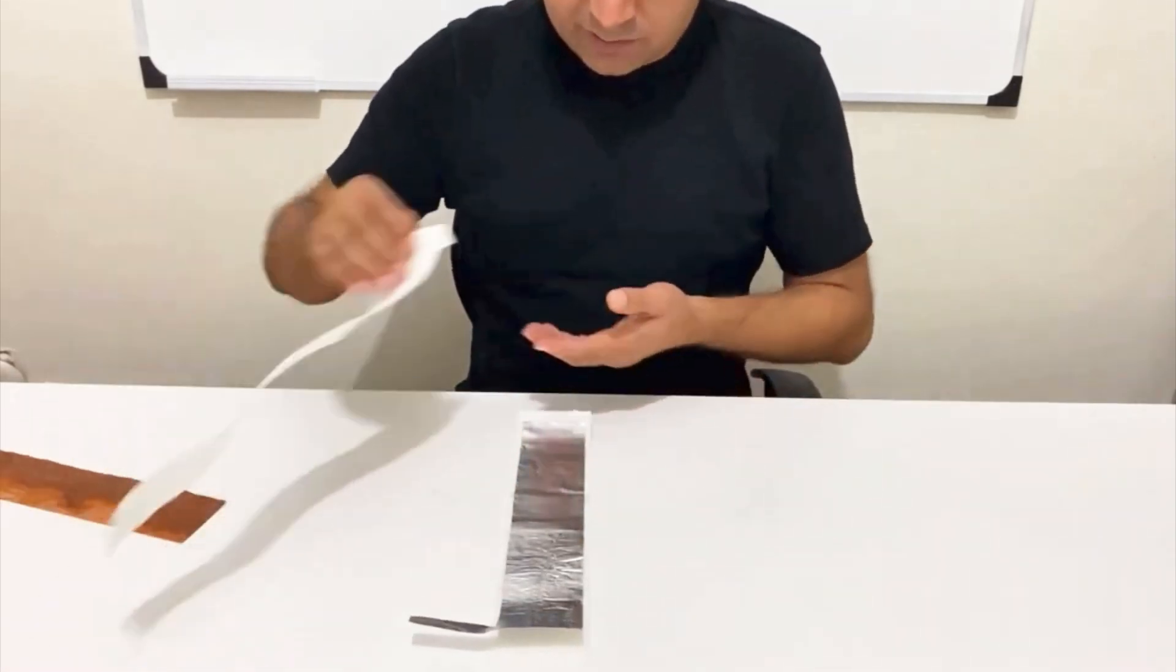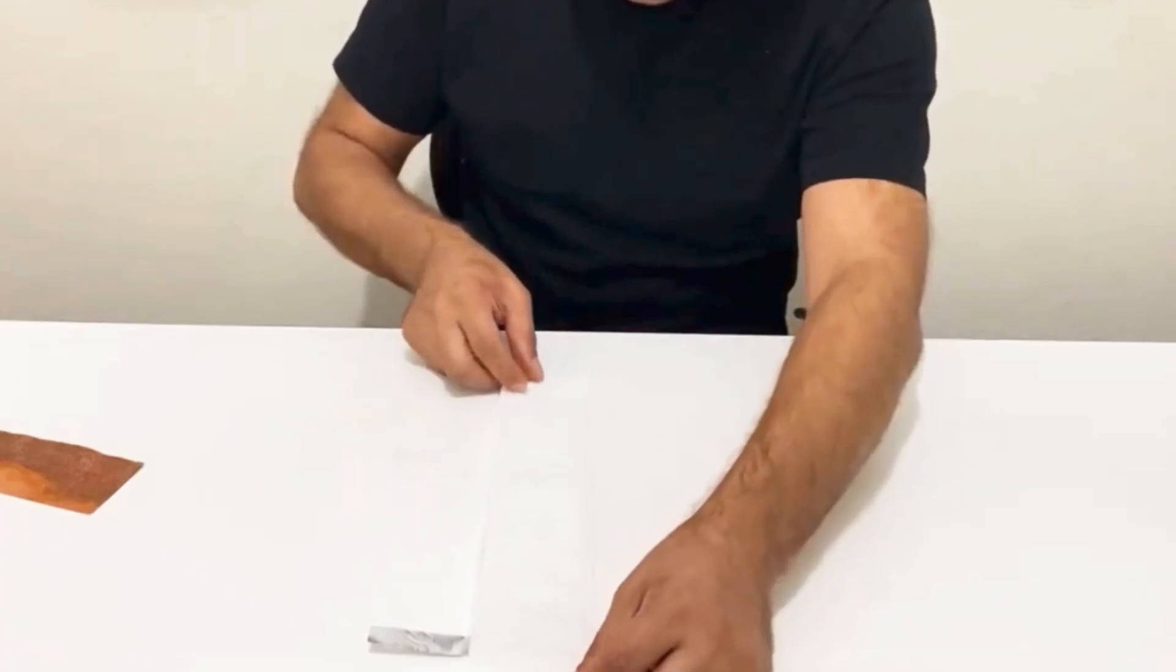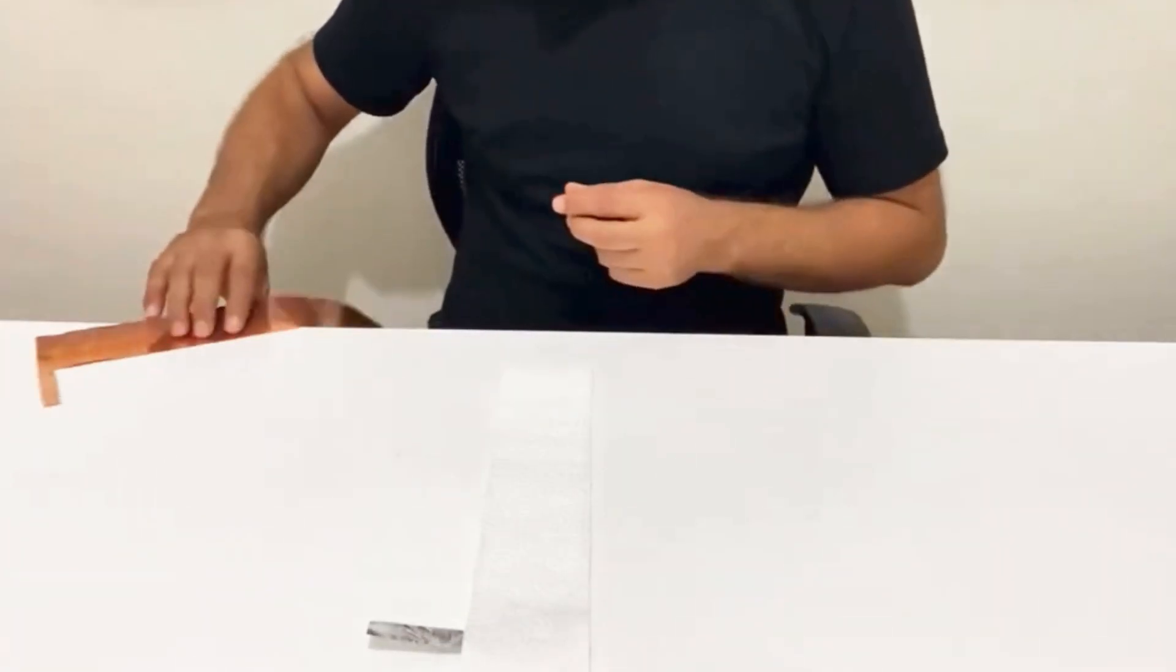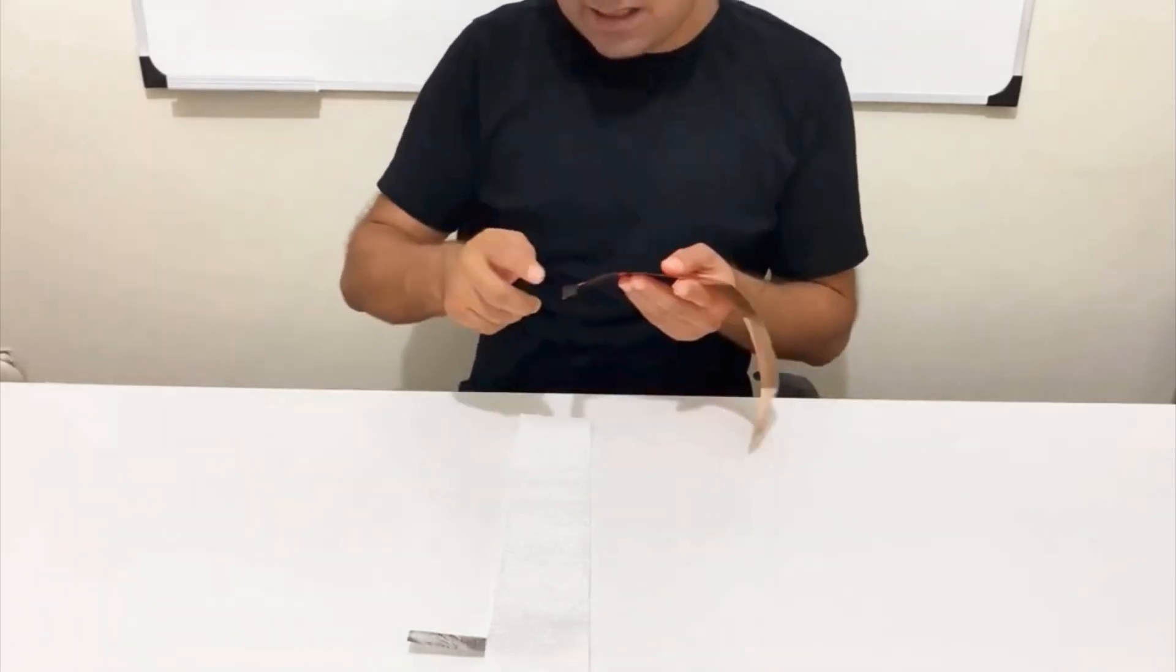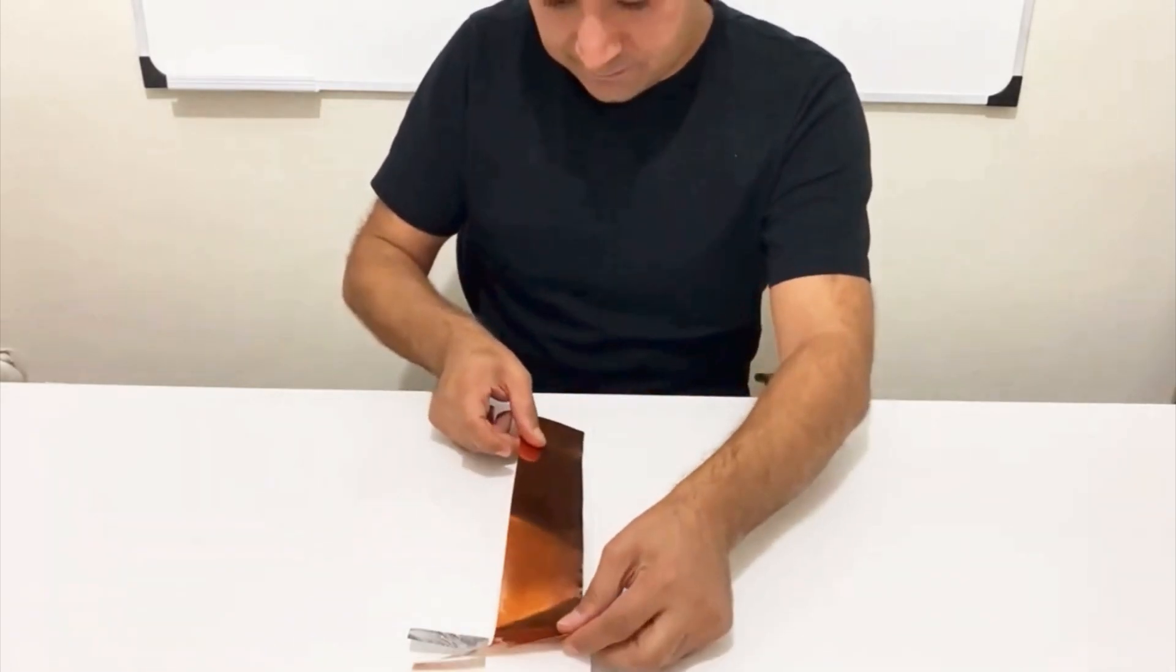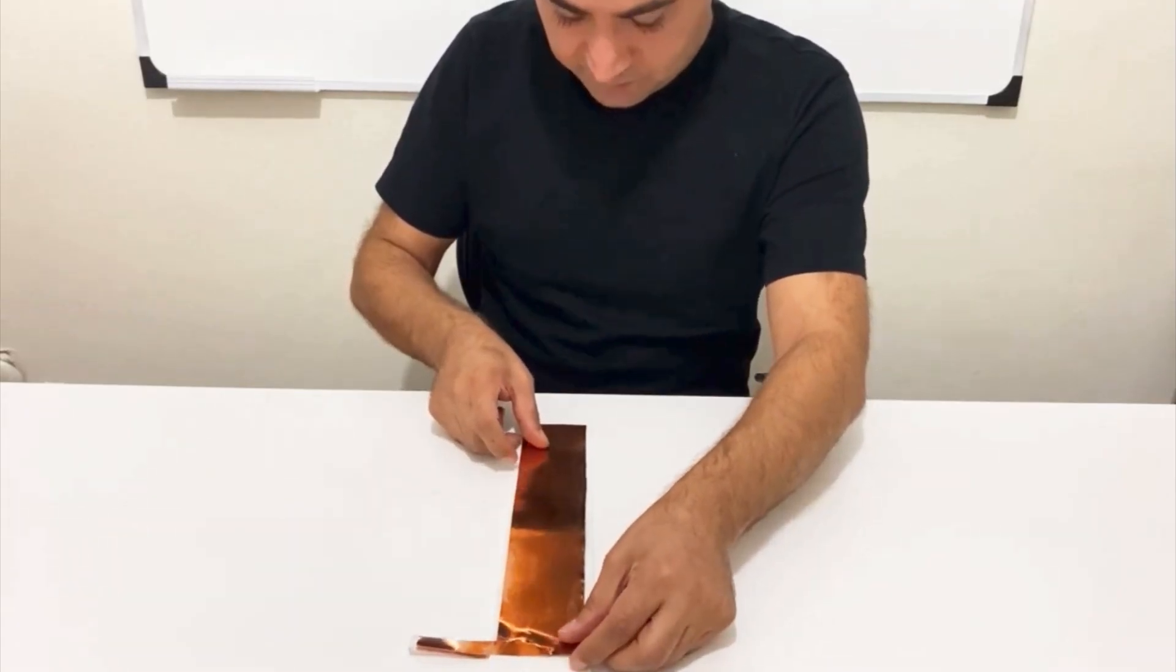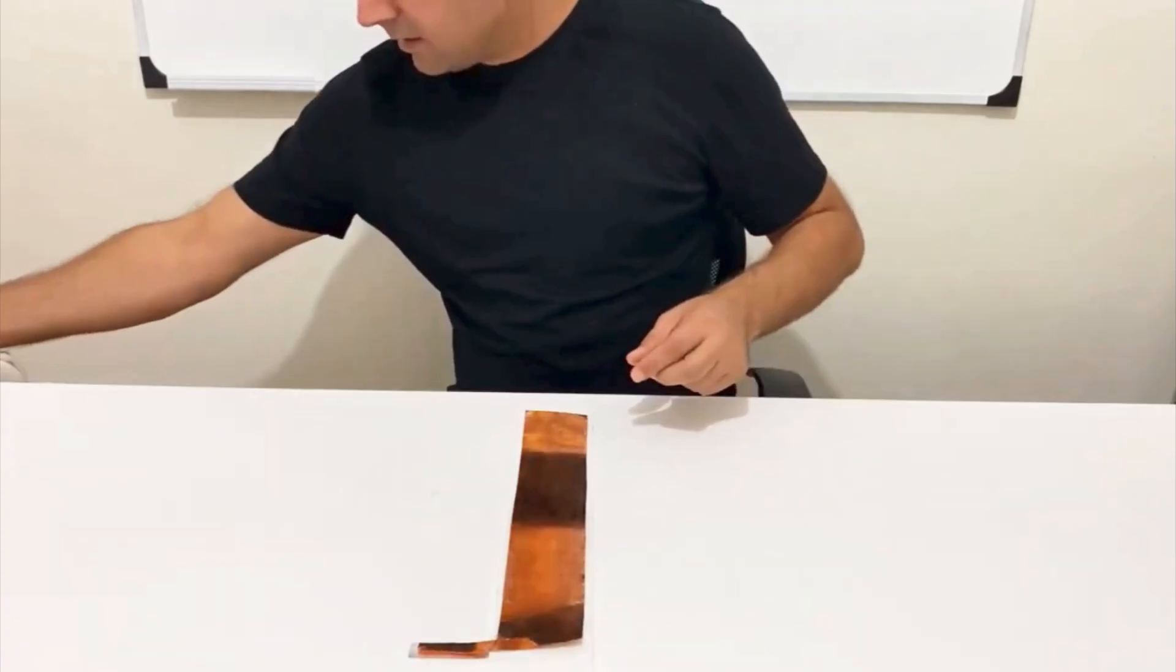I'm going to use the second paper towel. Be careful. The aluminum foils and copper foils shouldn't be touched to each other. And this part should be overlaid with each other. Just put here and tape this one.